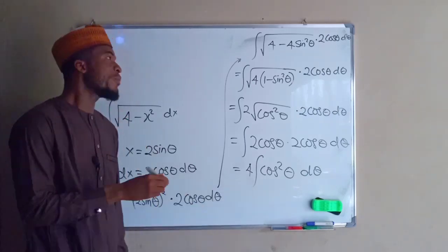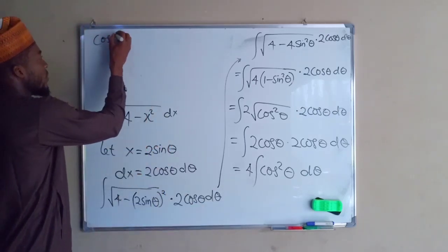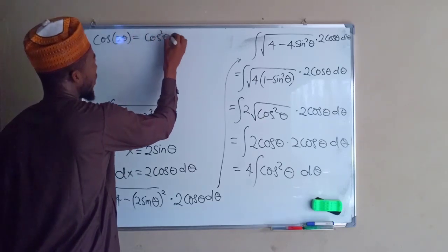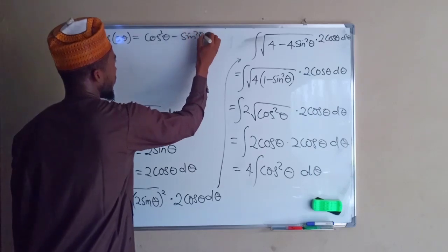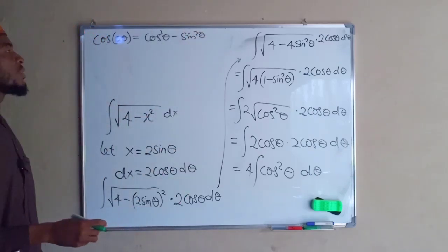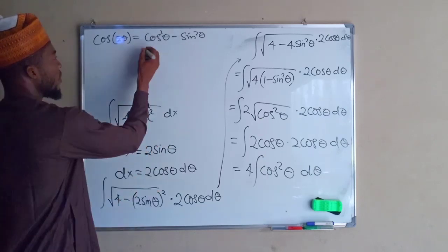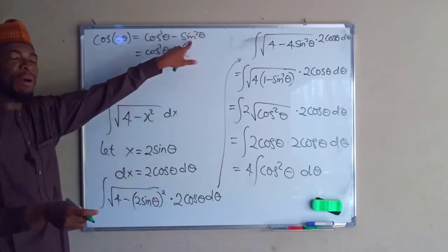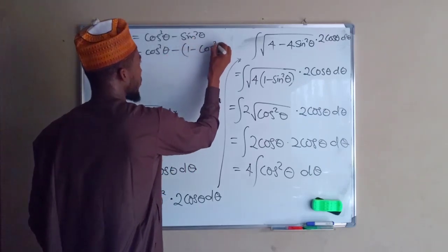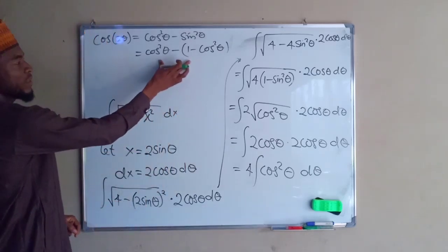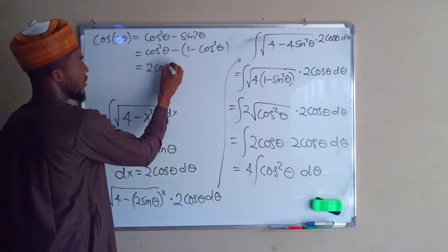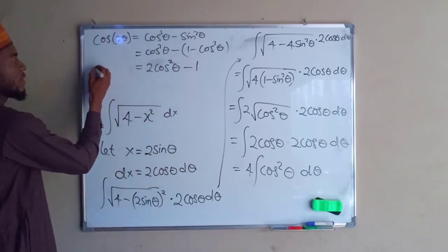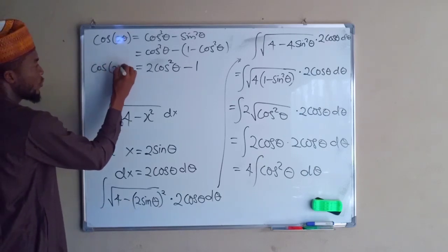Remember the cosine of double angle: cos 2theta equals cos squared theta minus sine squared theta. If we write this in terms of cos theta, we replace sine squared theta with 1 minus cos squared theta. Expanding the bracket we obtain 2 cos squared theta minus 1, and this equals cos 2theta.